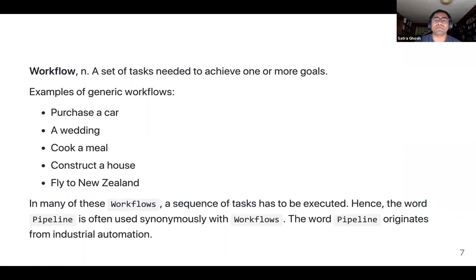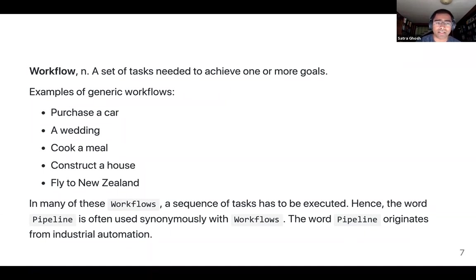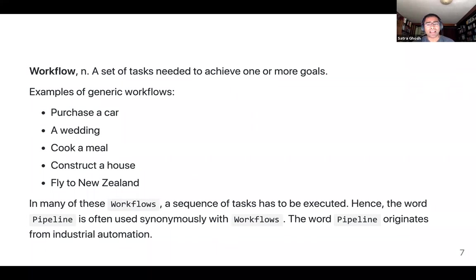They all require some set of workers — an individual or a group — to take some steps to get to the goal. The goal may be singular or multiple — cooking a meal means multiple dishes come out. In many of these workflows a sequence of tasks has to be executed, and that's where the word 'pipeline' becomes almost a synonym for 'workflow.' This originates from the industrial automation world, where pipelines started achieving efficiency in construction of industrial products, especially cars.